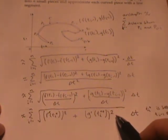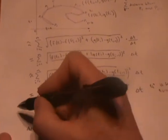So this is an expression for the approximate arc length. The exact arc length is going to be the limit